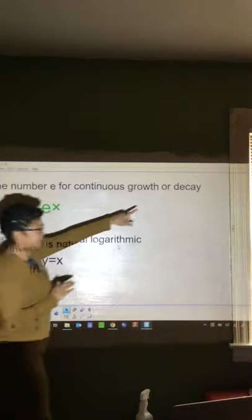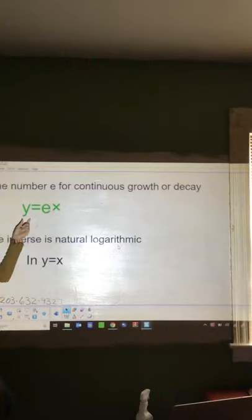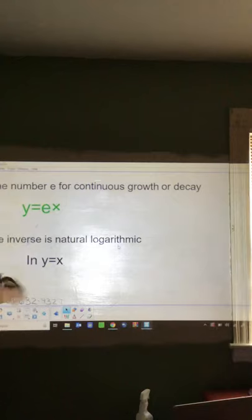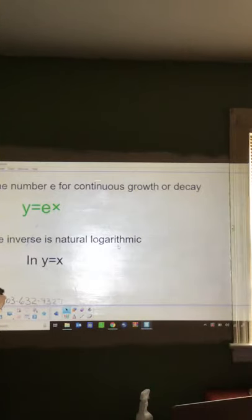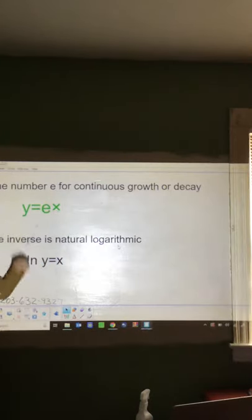With COVID, hopefully it's going to start to decay. It's still going to be a function involving e, because if it decays at a continuous rate — multiple people recovering at a time — that's still exponential. Right now they say if I have the virus, I can give it to up to three people. For every person that has it, three more people get it — that's what makes it exponential, not linear. That's the difference between exponential and a linear function.